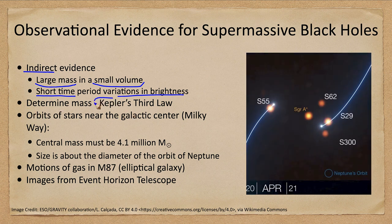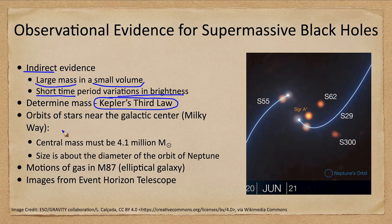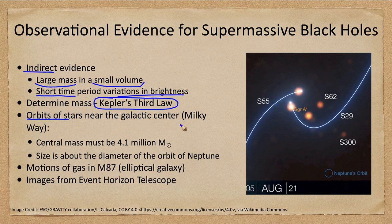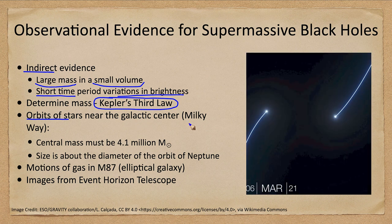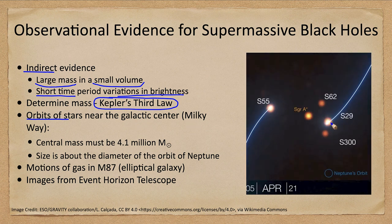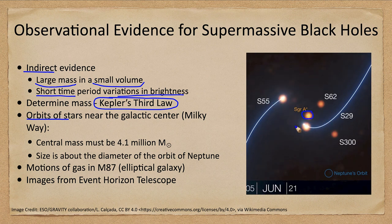How do we determine the mass? We use Kepler's third law. We can do that with orbits of stars near the center of our galaxy, for example. Let's look at this as we watch these two stars come near Sagittarius A*, which is the central portion of our galaxy.